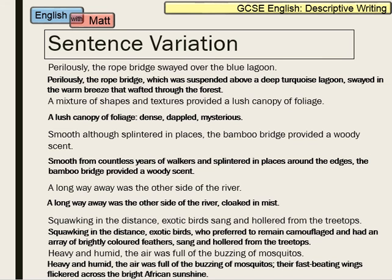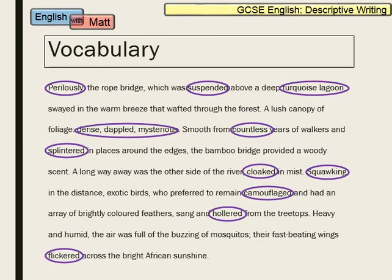Using the same image of the bridge, I now want to turn to vocabulary. I've redrafted this a bit more to include lovely vocabulary: adverb 'perilously suspended', 'turquoise lagoon', 'camouflage', 'hollered', 'flickered', 'squawking' — all circled in purple as impressive vocabulary. What the examiner wants to see is that you're not just using a simple register, but using words that are more complex and impressive. Words you might have picked up from reading extracts or from work on synonyms — things where you're showing off that you know more complex vocabulary. And obviously these are all spelt correctly, which is also impressive for spelling, punctuation, and grammar.